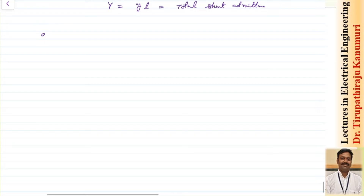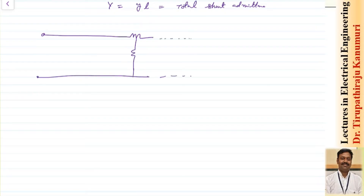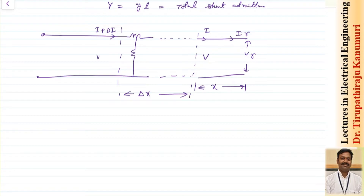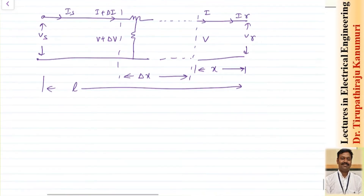For calculation, consider a long transmission line at a particular instant with series and shunt parameters varying along its length. At the receiving end, voltage is Vr and current is Ir. At a distance x from the receiving end, the current is i and the voltage is v. I take a small elemental length delta x. In this element, the current increases to i + delta i due to the shunt element, and the voltage becomes v + delta v due to the series element drop. The sending end voltage is Vs, current is Is, and the total line length is l.